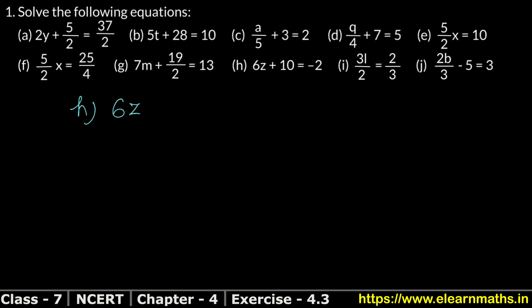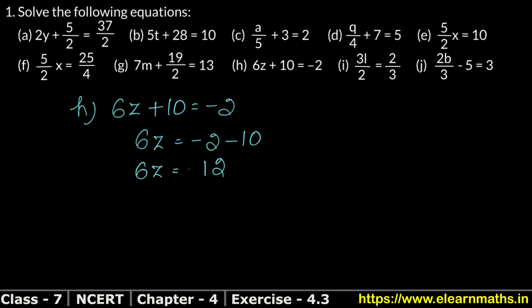Part h: 6z + 10 = −2. Moving 10 to the right side: 6z = −2 − 10 = −12. Dividing both sides by 6: z = −12/6 = −2. That is the answer.